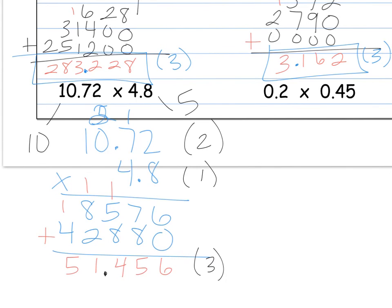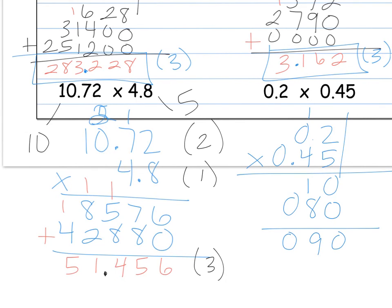Next one, we have a couple decimals, so we've got to be careful here. 2 tenths times 45 hundredths. Lining up on the right again. 5 times 2 is 10, 5 times 0 is 0, plus 1. No more to do. So fill in a 0 for the 4. 4 times 2 is 8. 4 times 0 is 0. Add those together. Now we have 1 decimal place, 2 decimal places, total of 3. 1, 2, 3.